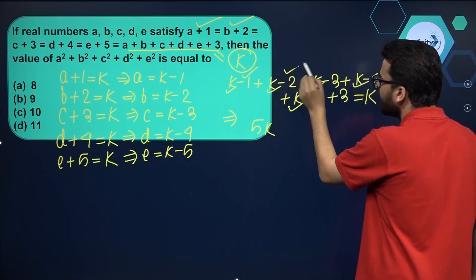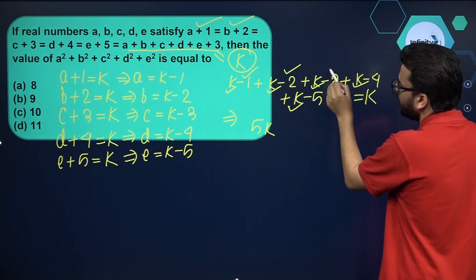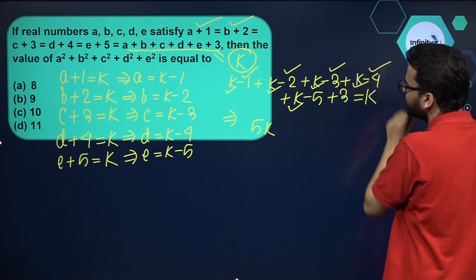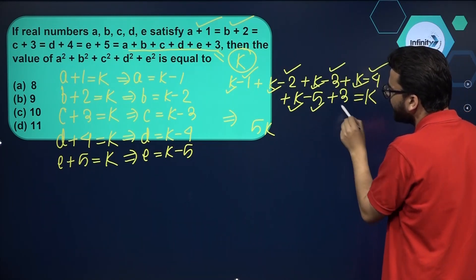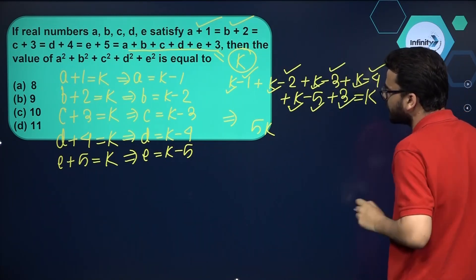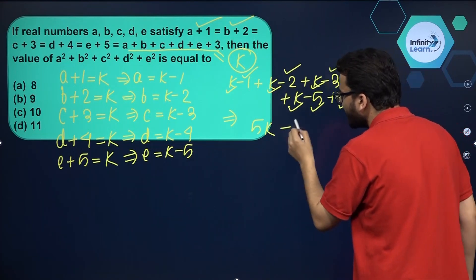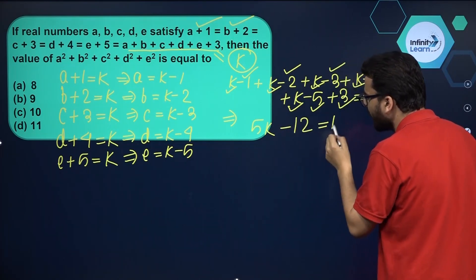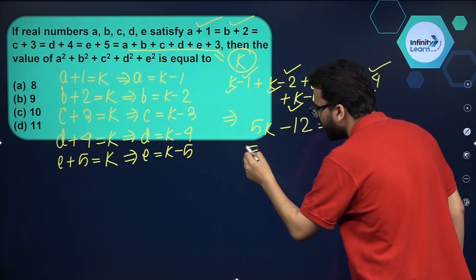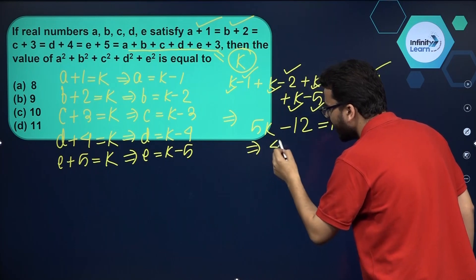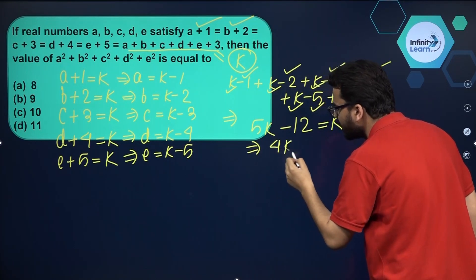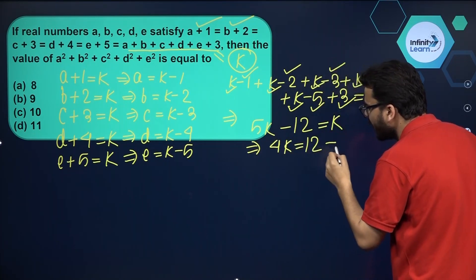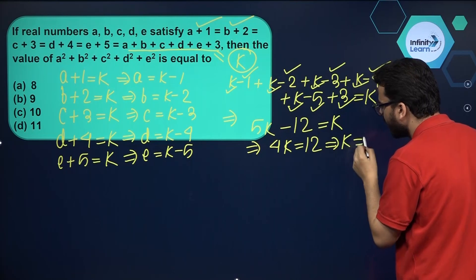Simplifying the constant terms: −1 − 2 − 3 − 4 − 5 + 3 = −12. So the equation becomes 5k − 12 = k, which gives 4k = 12, therefore k = 3.